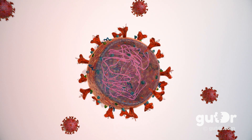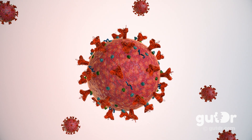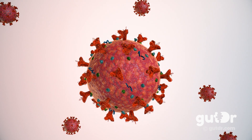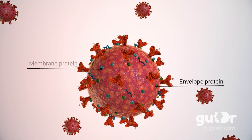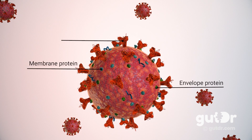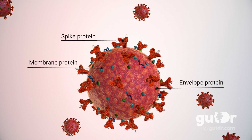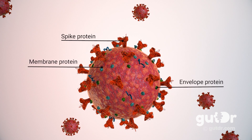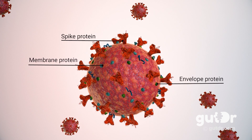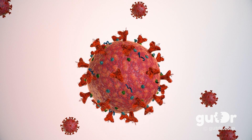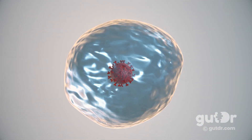The other important proteins on the outside of the virus include the envelope protein, membrane protein, and the spike protein, which is the most prominent feature of coronaviruses and from where they get their name.